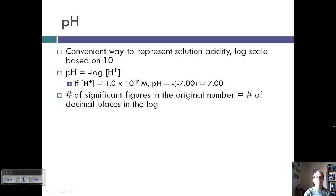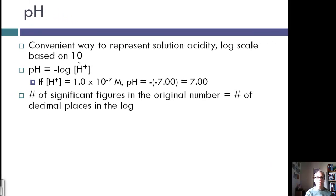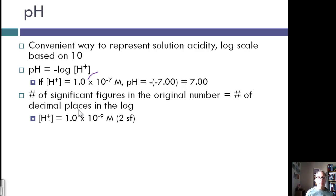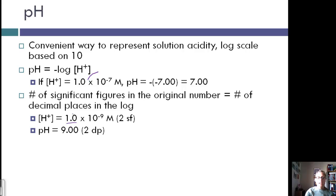To determine significant figures, the number of significant figures in the original number is equal to the number of decimal places in the log. So here we have two significant figures, and in the pH we have two decimal places. So the number of significant figures is equal to the number of decimal places.